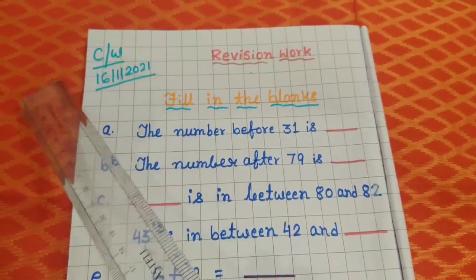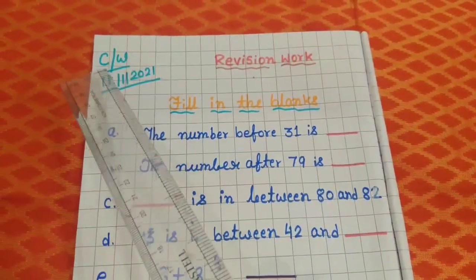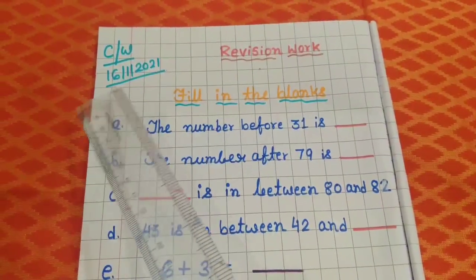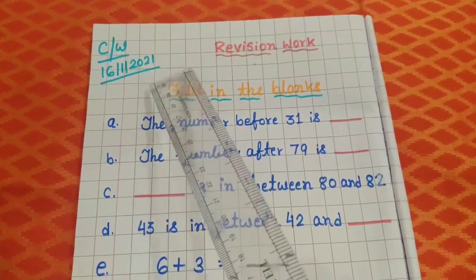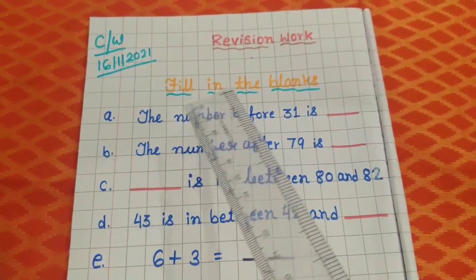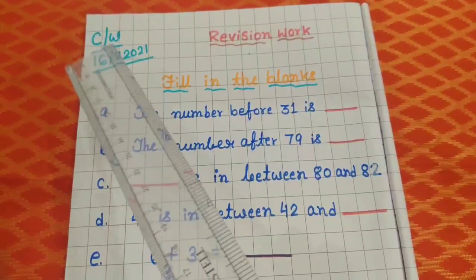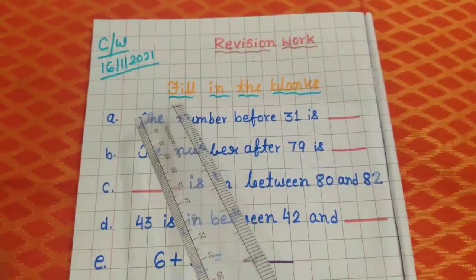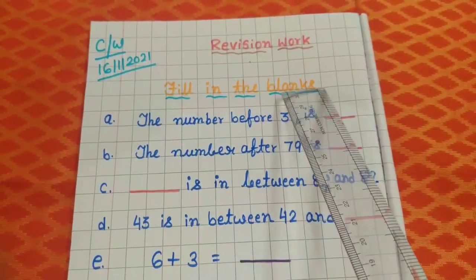Here you can see, I have written CW means classwork and I have given the date also 16.01.2021. So please everybody take your school copy, open English page and please write it down, classwork and please put the date also. And here I have written the heading,